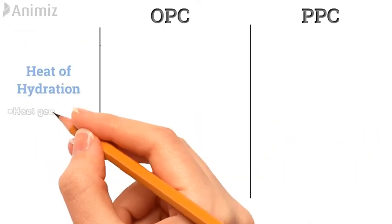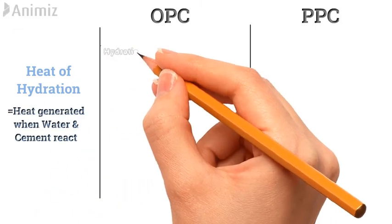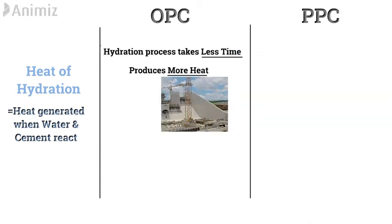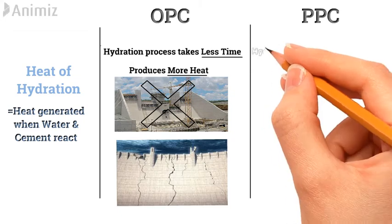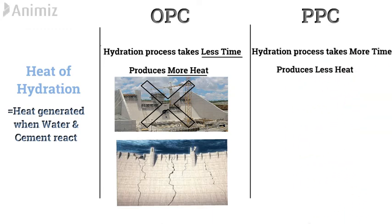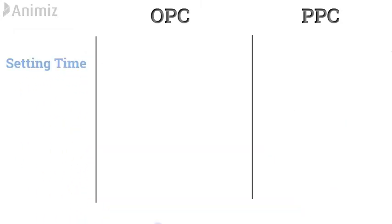Heat of Hydration: Heat of hydration is the heat generated when water and cement react. In the case of OPC, the hydration process takes less time for completion and produces more heat than PPC. Please note, if cement produces more heat in less time, then it cannot be used for mass concreting, as it may generate cracks in structures. Whereas, in the case of PPC, the hydration process takes longer time and produces less heat. Hence, it is perfect for mass concreting.